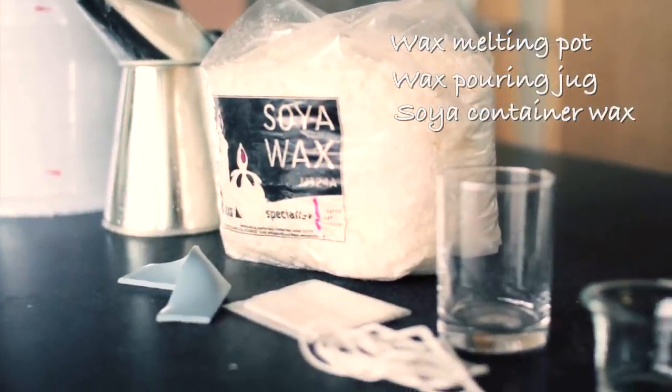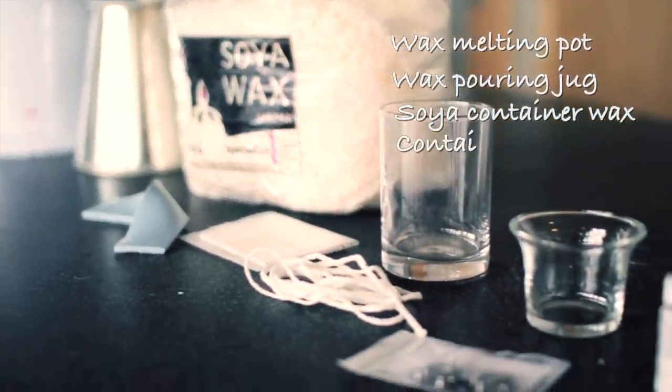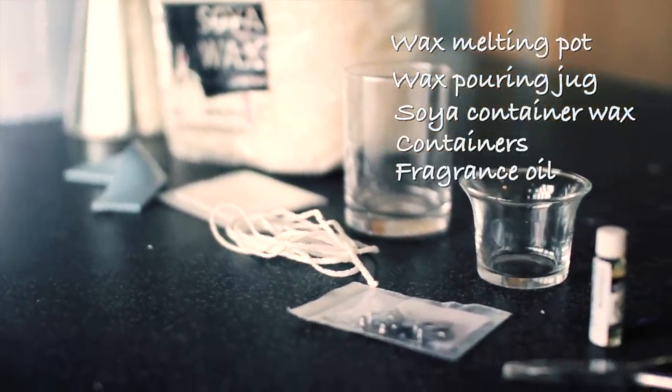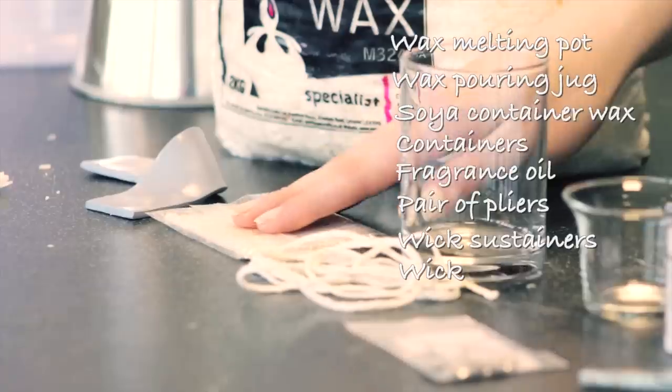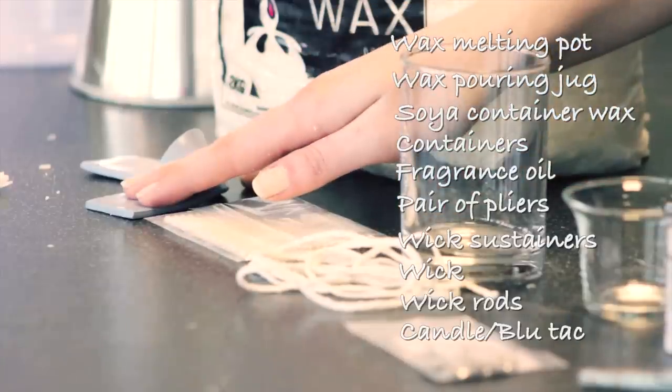For this process I'm going to be using a wax melting pot, a wax pouring jug, some soya container wax, containers, fragrance oil, a pair of pliers and some wick sustainers, some wick rods and some candle or blue tack.